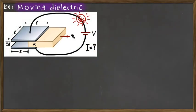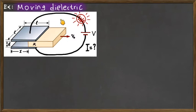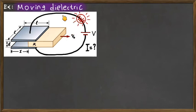We have an interesting problem: a parallel plate capacitor filled with a dielectric of dielectric constant kappa. In the original configuration, the dielectric fully fills the gap between the plates, and the capacitor is connected to a battery which provides a voltage difference across the terminals. To make the circuit more interesting, we also serially connect a light bulb, and we wait for a while so that the capacitor is fully charged.